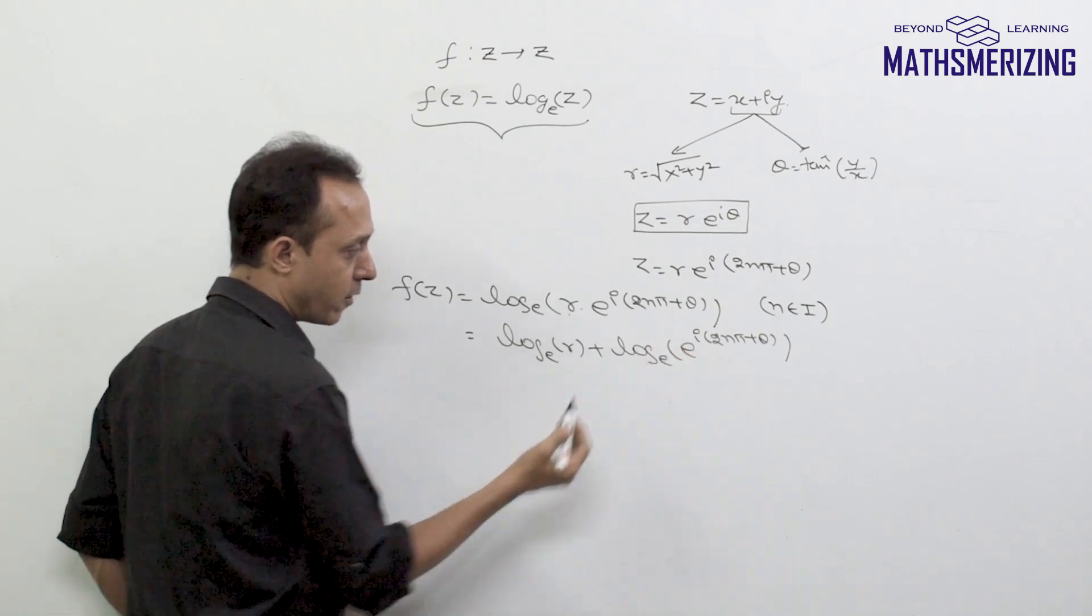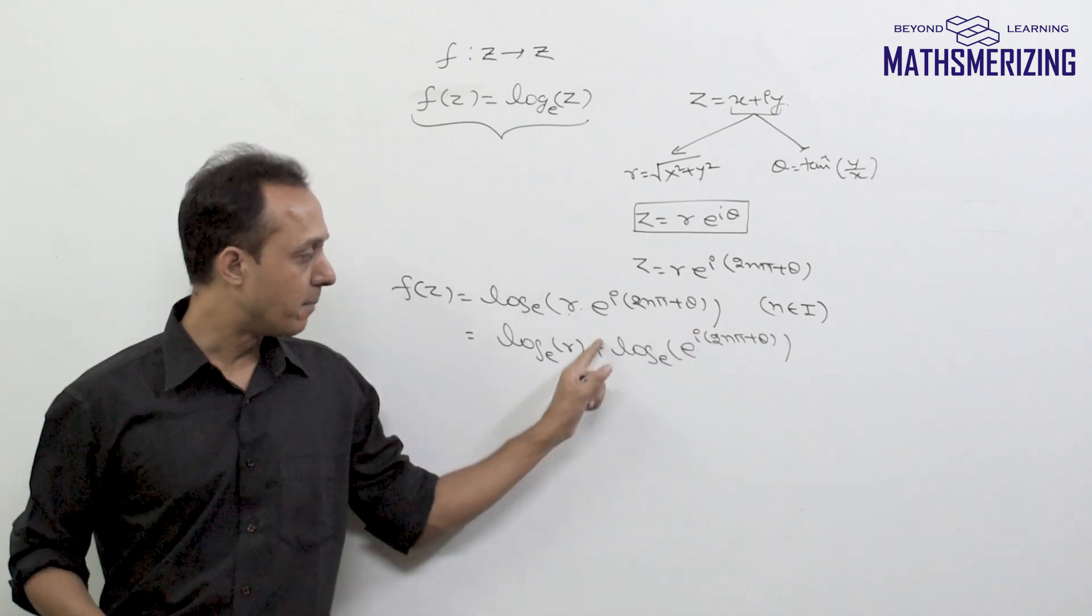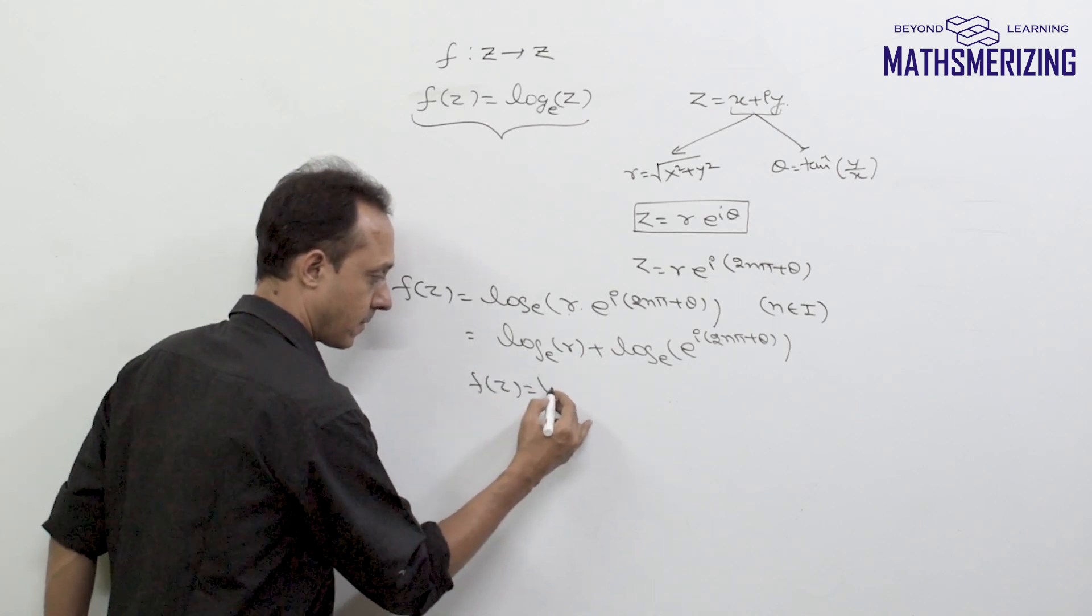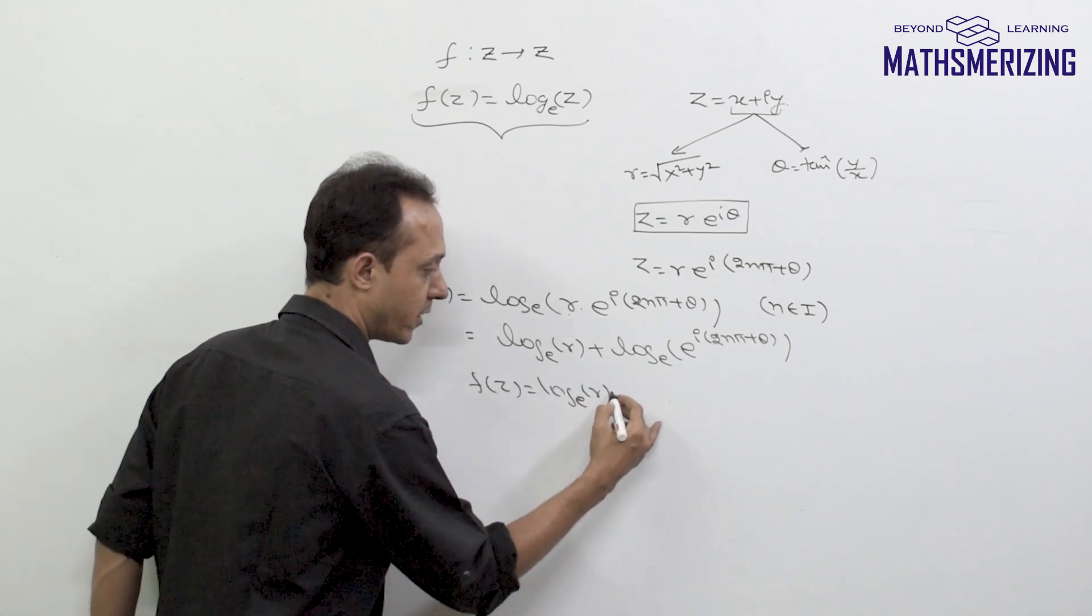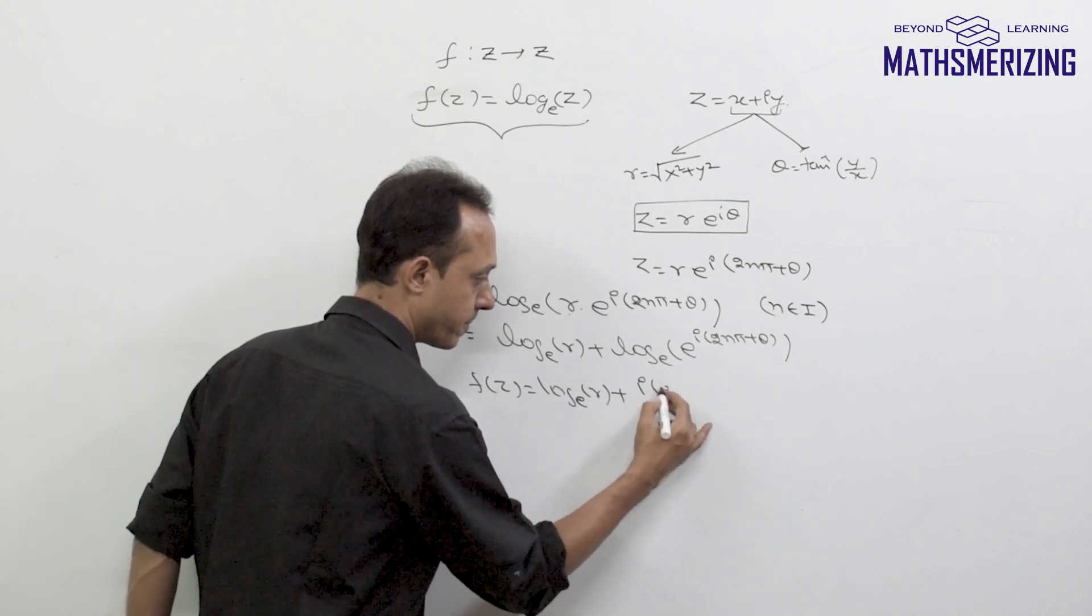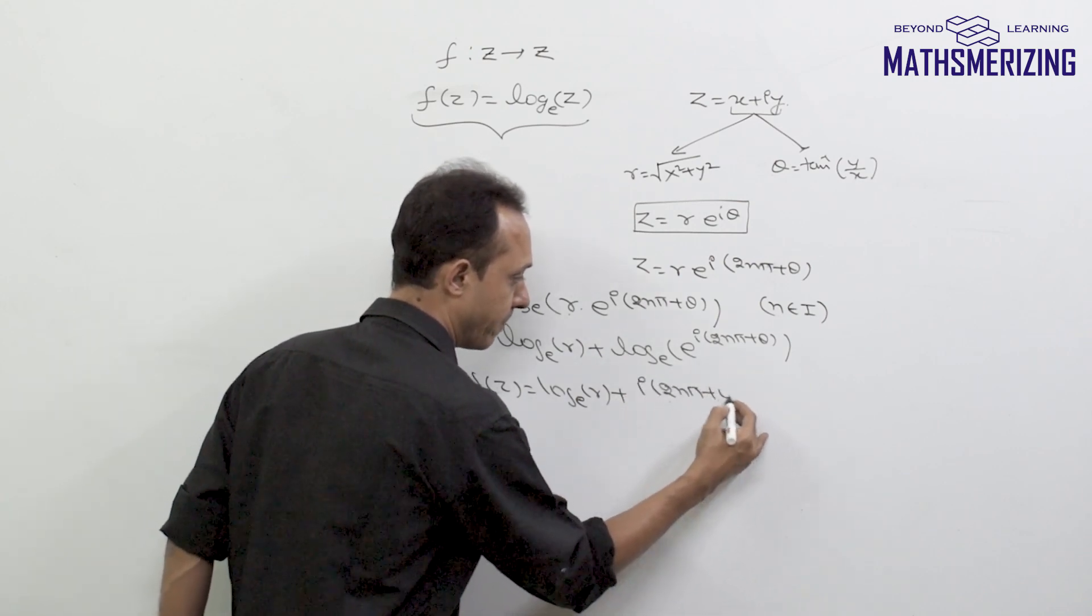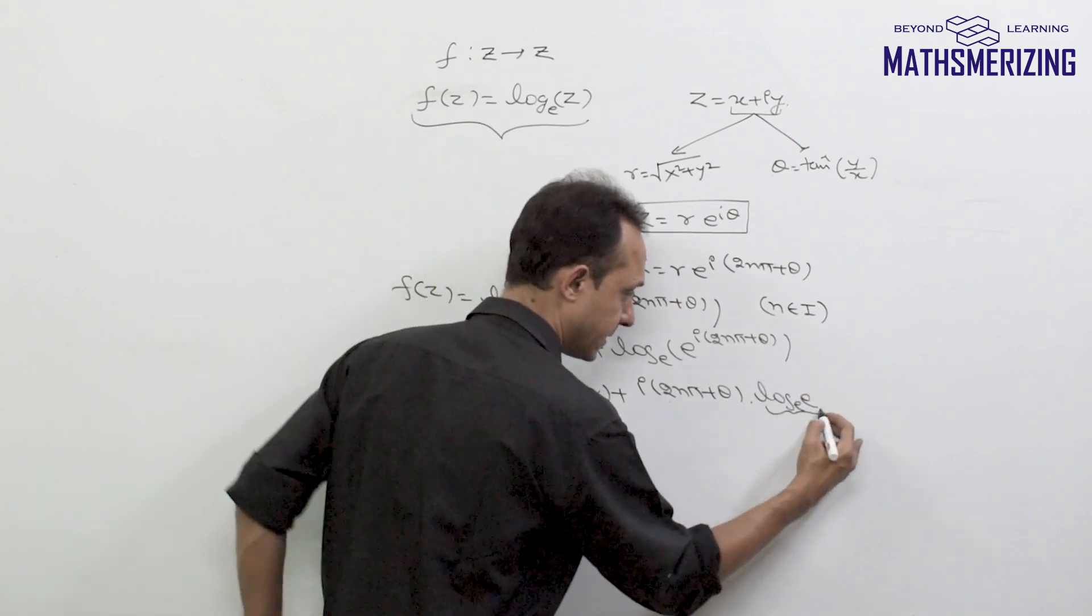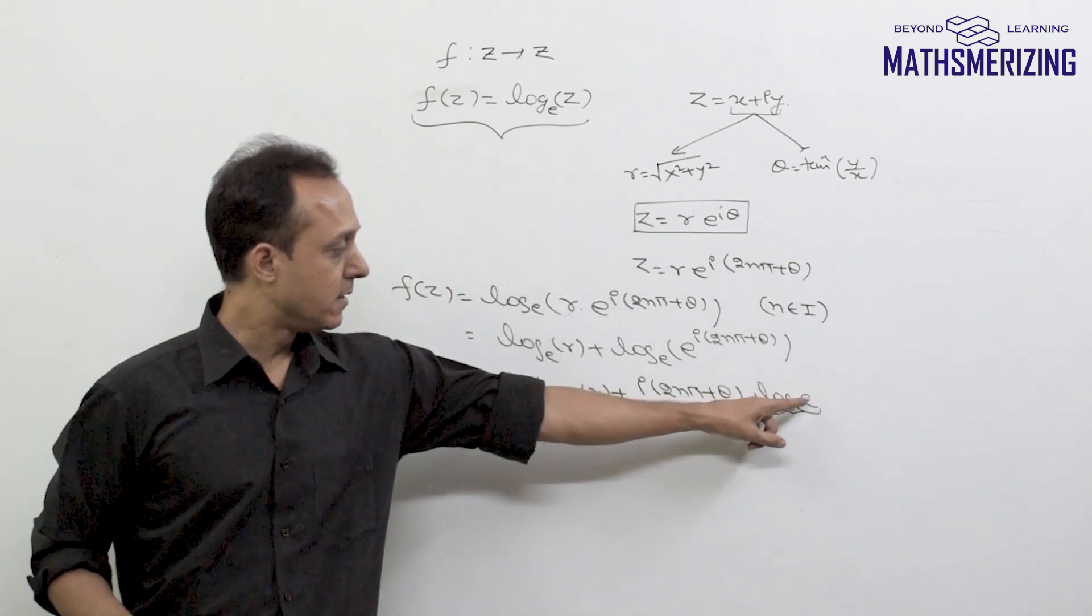Now another property of logarithms, so this power will come out. So I can write it as log r to the base e and then i*(2n*pi + theta) and then into log e base e. Now same base, same number, logarithm is 1.